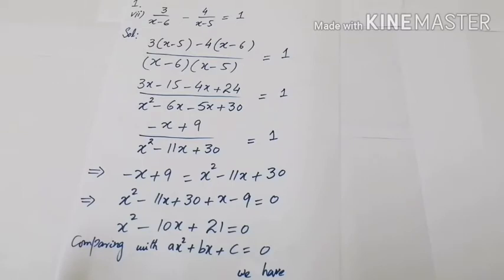Opening the brackets in the numerator: 3x − 15 − 4x + 24 over x² − 6x − 5x + 30, which equals 1. Simplifying the numerator gives (−x + 9) / (x² − 11x + 30) = 1. Cross multiplying: −x + 9 = x² − 11x + 30.